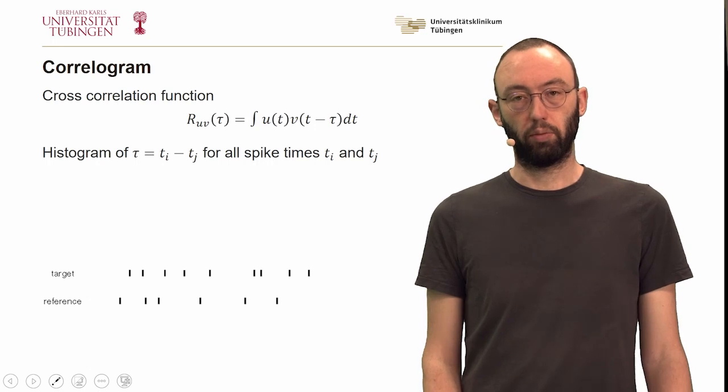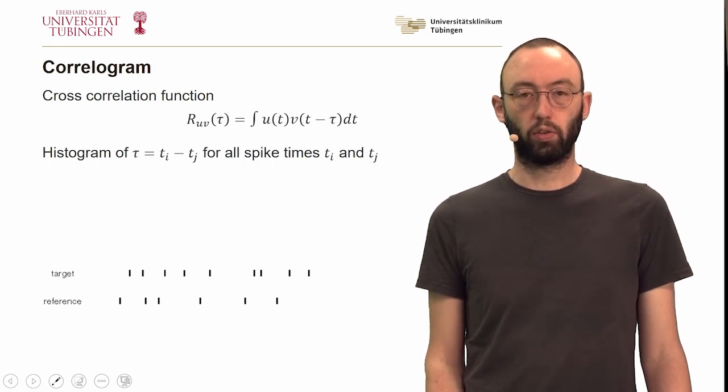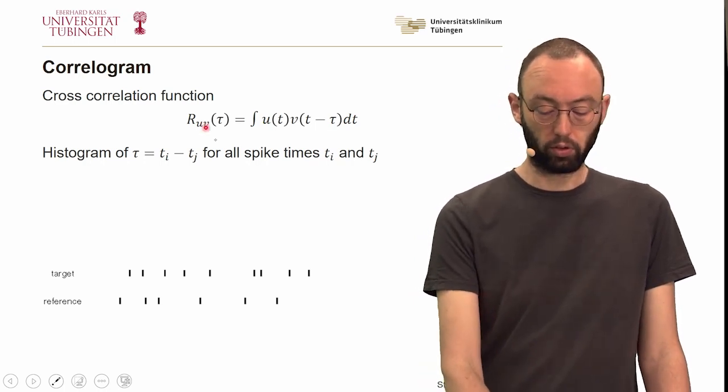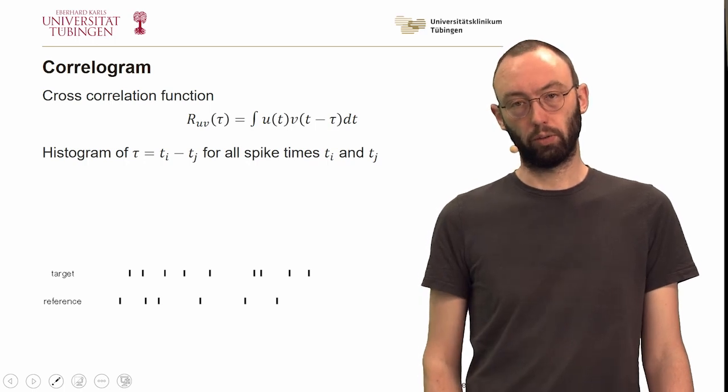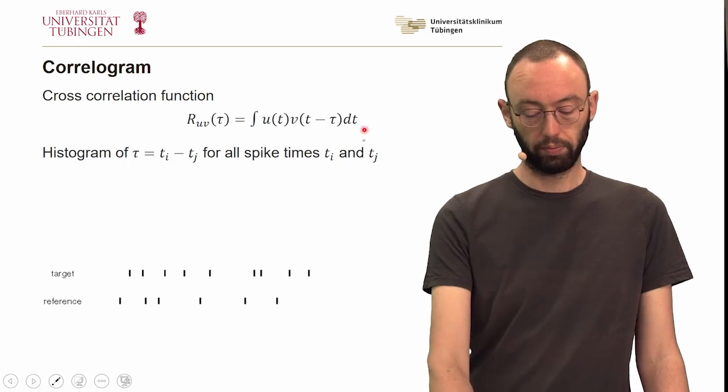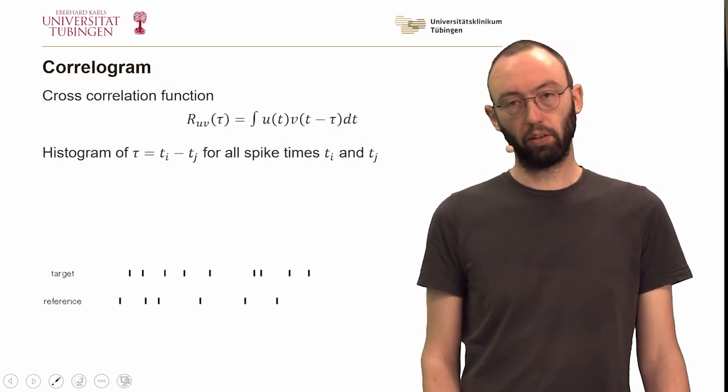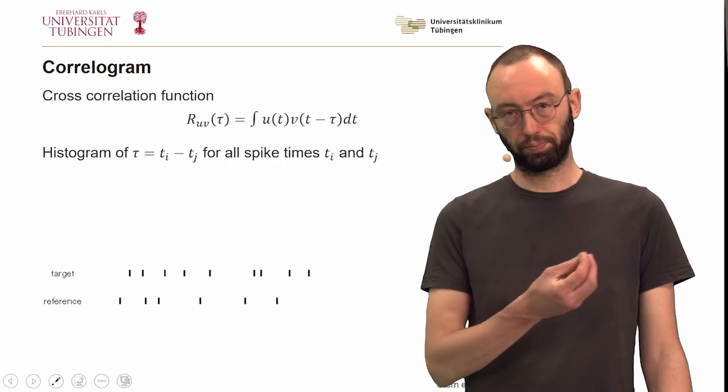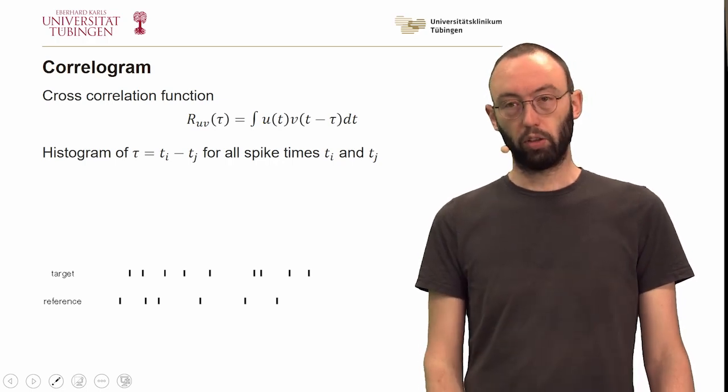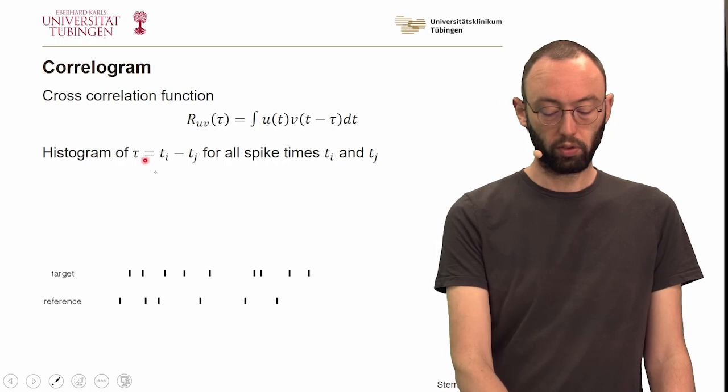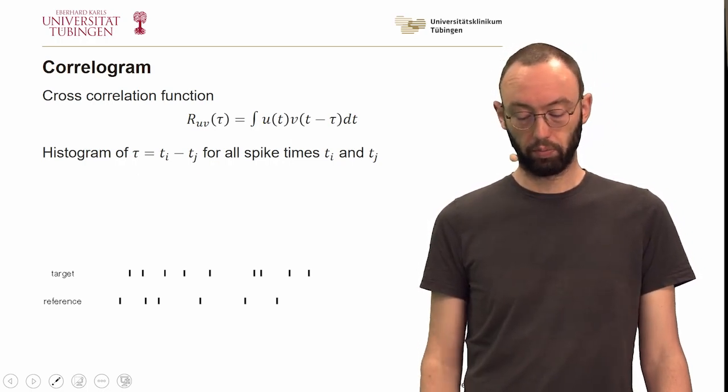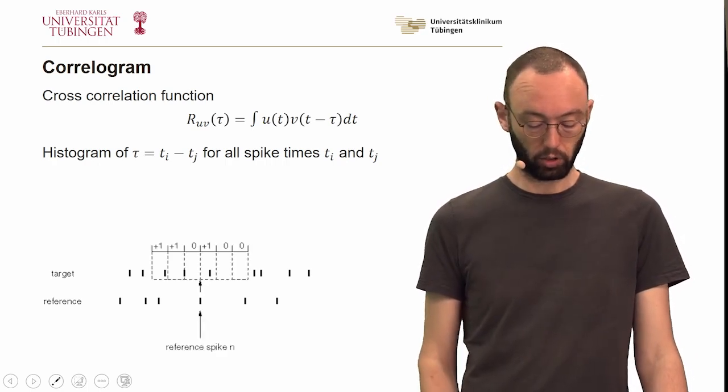How can we detect that in a spike train? A tool to do that is the so-called auto-correlogram or cross-correlogram. The cross-correlation function is simply the convolution of two time series with one another. Because spike trains are time series where events happen at discrete time points, we can reformulate the correlation function simply as a histogram of all pairwise differences in spike times.